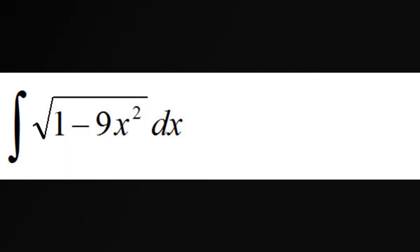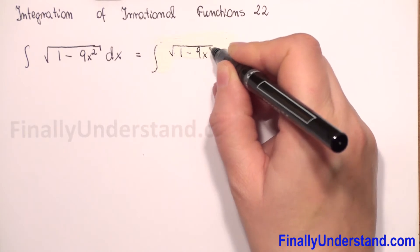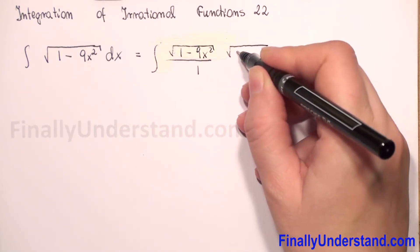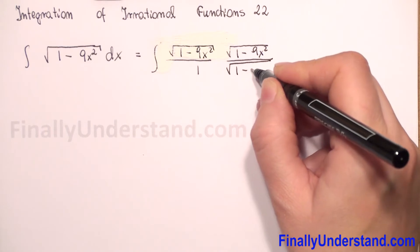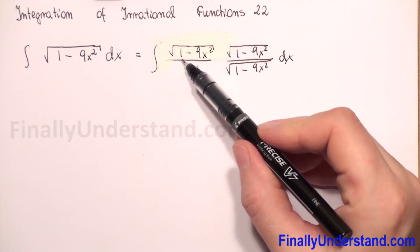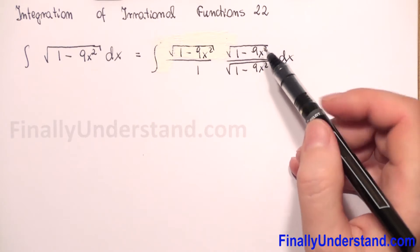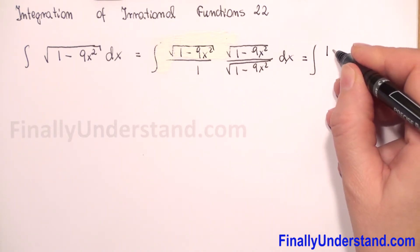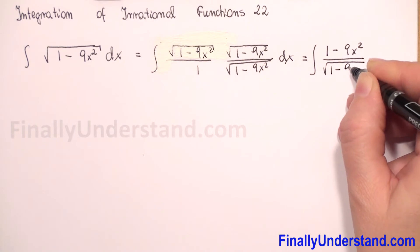First, I will change our integrand to a fraction. We have the integral of √(1-9x²), which we write over 1, then multiply numerator and denominator by √(1-9x²) over √(1-9x²). So now we have √(1-9x²) times √(1-9x²) in the numerator, which means we can write this as the integral of (1-9x²) over √(1-9x²).